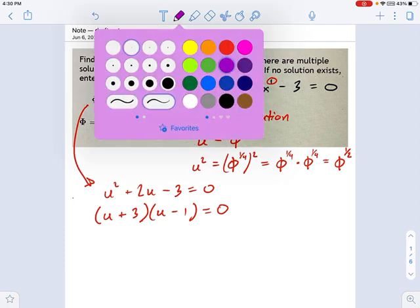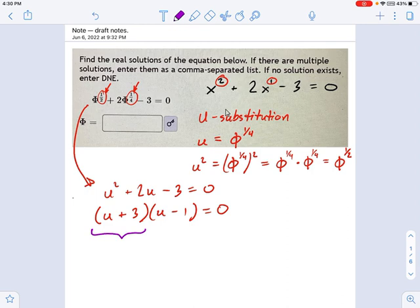And now what we're going to do is solve each of these factors separately using the zero product theorem. The zero product theorem says if you have two things multiplied together and the result is 0, either one of them is 0 or both of them are 0. But there's a 0 somewhere, we just don't know which one it is, so we have to consider them both being 0. u + 3 = 0, that means u = -3. And the other one over here says u - 1 = 0, so u = 1.